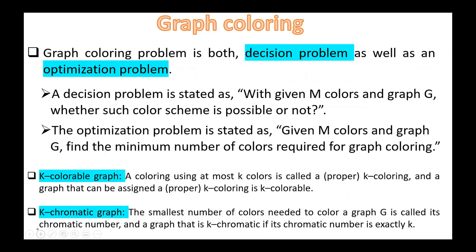Graph coloring problem is both a decision problem as well as an optimization problem. A decision problem is stated as: given M colors and graph G, whether such a color scheme is possible or not. The optimization problem is stated as: given M colors and graph G, find the minimum number of colors required for graph coloring.